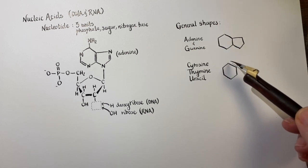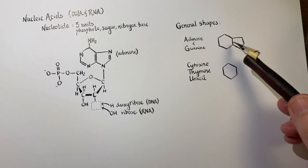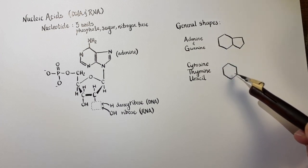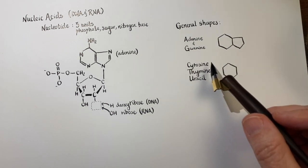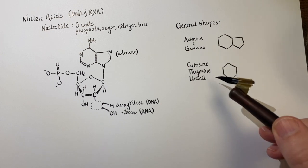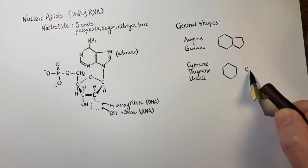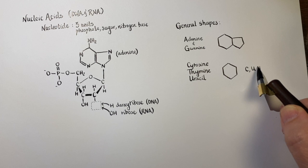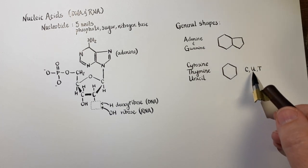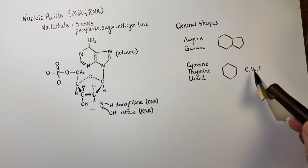Both of these groups absolutely have other functional groups coming off of them, and they have some aromaticity with double bonds. I'm just showing you how adenine and guanine are larger, and these three are smaller. The way I remember that cytosine, uracil, and thymine are the three smaller ones is by thinking of the word CUT — C for cytosine, U for uracil, T for thymine — and if you cut something, you make it smaller.